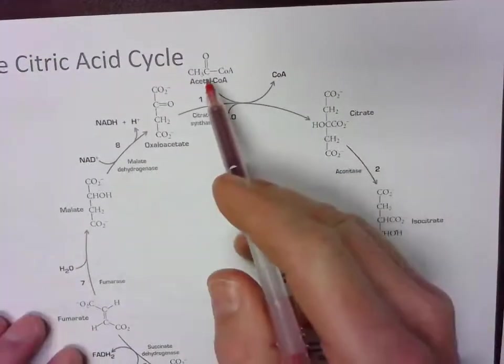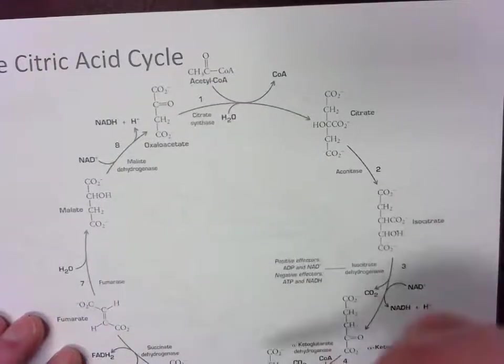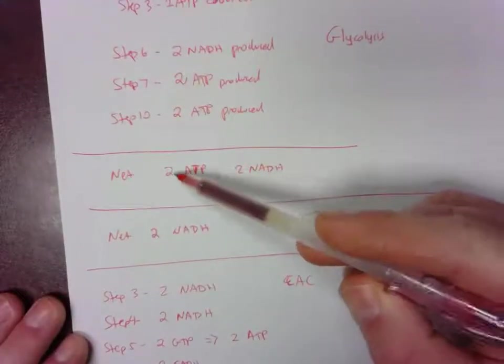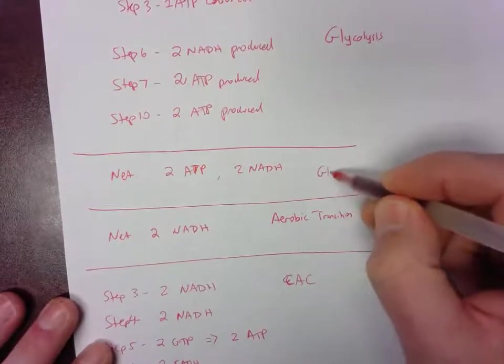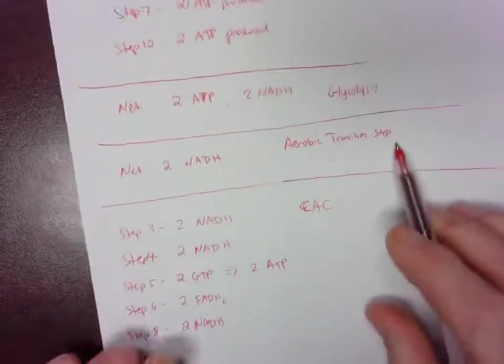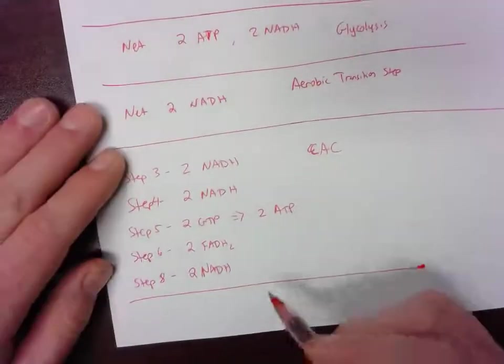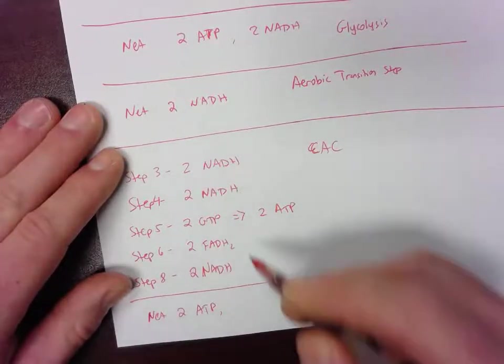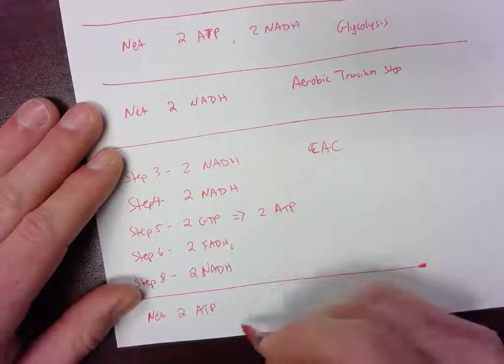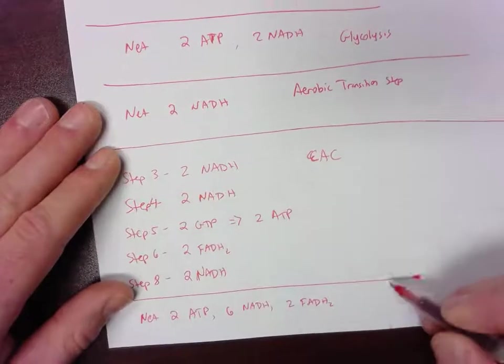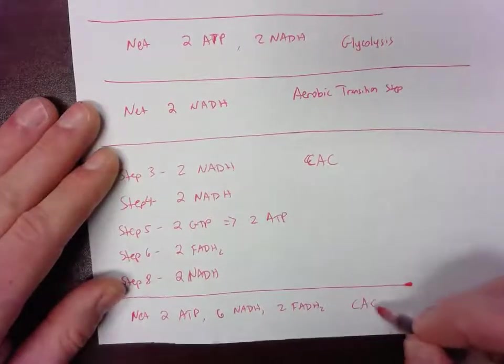And then it starts over again. But of course, we've already accounted for the fact that this is going around twice because we're doubling all of our numbers around here. Now let's take a look at our summary. So we net two ATPs, two NADHs from glycolysis. We net two NADHs for the aerobic transition step. And for the citric acid cycle, we're going to get six NADHs, two FADH2s. That would be the citric acid cycle.